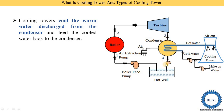How is this steam condensed? This steam is condensed by using cold water. This cold water is supplied through the pipes and it absorbs the heat energy from the steam. When this cold water absorbs the heat energy of the steam, the temperature of the water increases. This hot water from the condenser outlet is then supplied to the cooling tower.